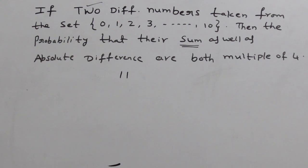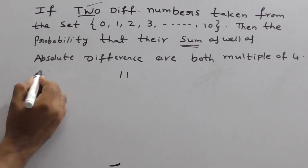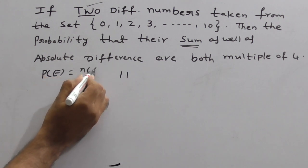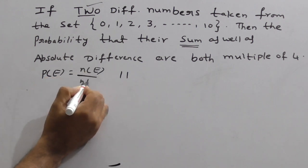Right. So from this, you have to select two different numbers. What is the basic definition of probability? Probability of any event is nothing but N of E by N of S.